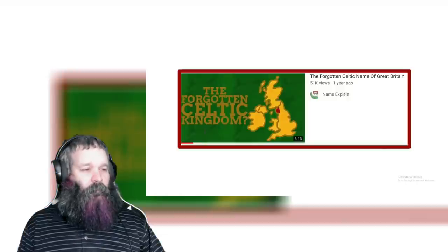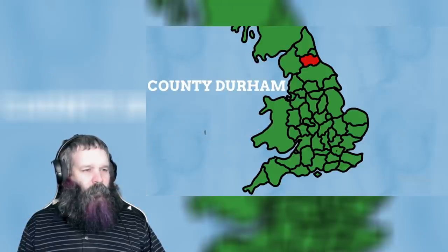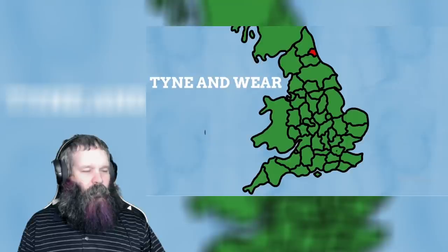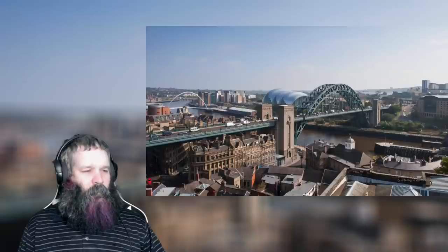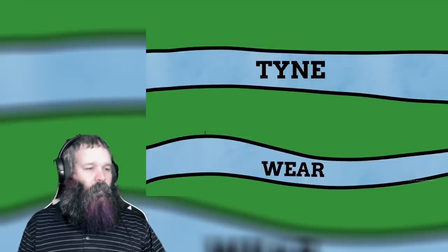Continuing north we have Cumbria, the northwesternmost point of England — there's actually an entire video about this name on the channel. This is a Celtic name meaning 'land of the Cymry,' the people who live there. This relates closely to the Welsh name for Wales, Cymru, as they are both Brittonic words meaning 'fellow countrymen.' East of Cumbria we have County Durham, named after the town of Durham, with the name simply meaning 'a city on a hill' — which it is. Above Durham is the county of Tyne and Wear, which contains the wonderful city of Newcastle upon Tyne, simply named after the two rivers that run through it.